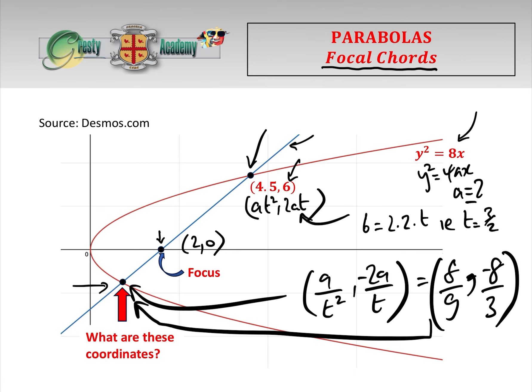The coordinates of that point, pretty much by inspection, are 8 over 9, minus 8 over 3, because we can find a by inspection just by comparing the parabola to y squared equals 4ax, and then all we have to do is find the value of t in the coordinate given, and then plonk it into this lovely little coordinate here, and that gives us the answer. So the answer is 8 over 9, minus 8 over 3.